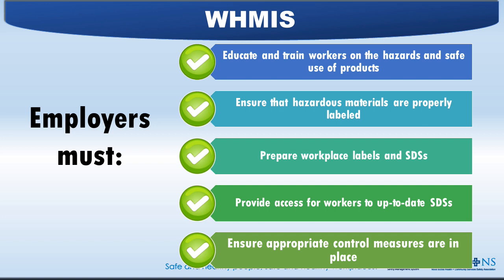Employer responsibilities include: educating and training workers on the hazards and safe use of products. These online modules cover the general aspects of WHMIS training, but workers must also be trained on the specific hazardous products they are using, handling, or in close proximity to. Employers must ensure hazardous materials are properly labeled and easily readable, prepare workplace labels when transferring products from bulk to smaller containers, provide workers access to up-to-date safety data sheets, and ensure appropriate control measures are in place — including proper storage and use of required personal protective equipment, or PPE.